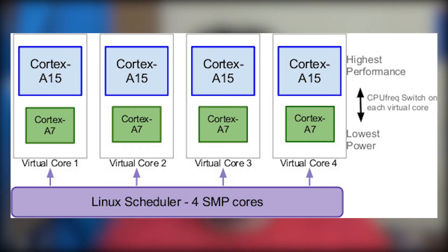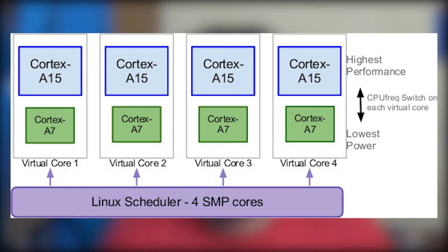The second method is the in-kernel switcher, or CPU migration. This involves pairing a big core with a little core, with possibly many identical pairs on one chip. Each pair operates as one virtual core, with only one core fully powered up at a time. The big core is used when demand is high and the little core when demand is low. When demand changes, the incoming core is powered up, the running state is transferred, the outgoing core is shut down, and processing continues on the new core. Switching is handled via the CPU freq framework.